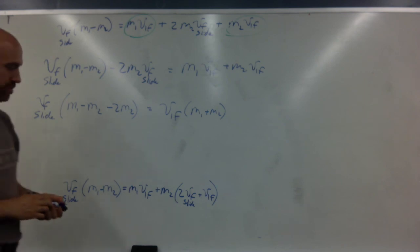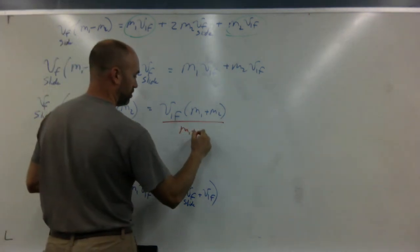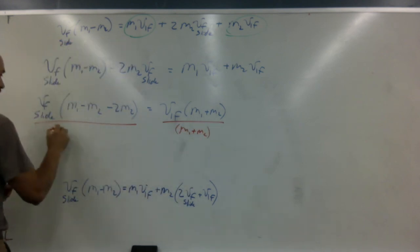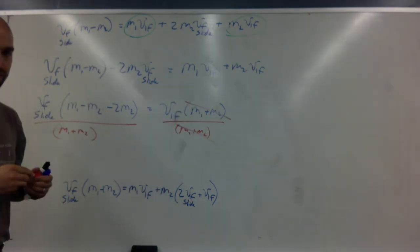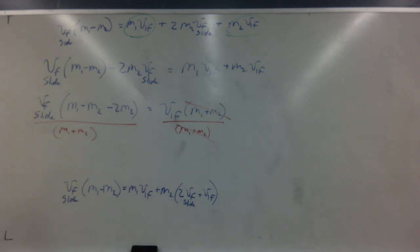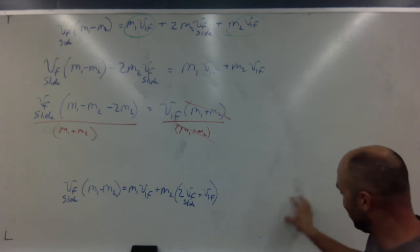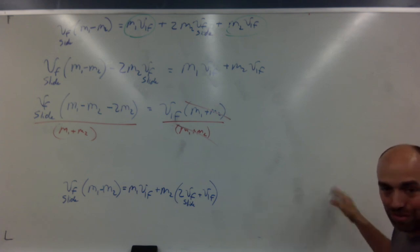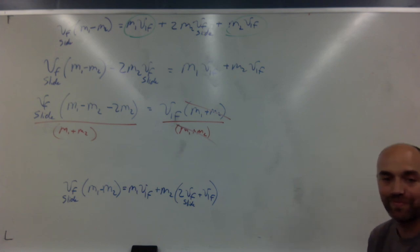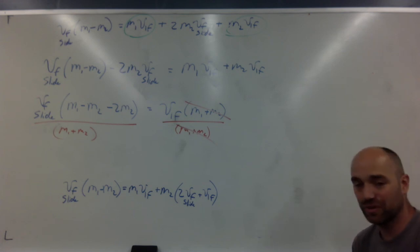Dividing both sides by M1 plus M2 gives us V1_final. Then we already have the equation V2_final equals 2·V_final_slide plus V1_final from earlier. Plug in V1_final to get V2_final — the speeds of both masses after the collision.